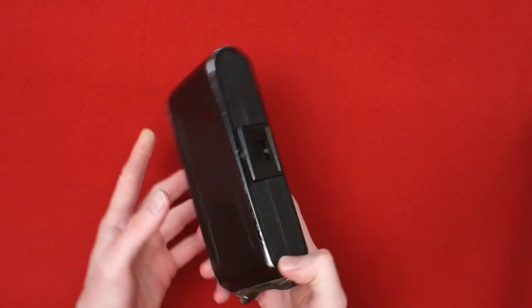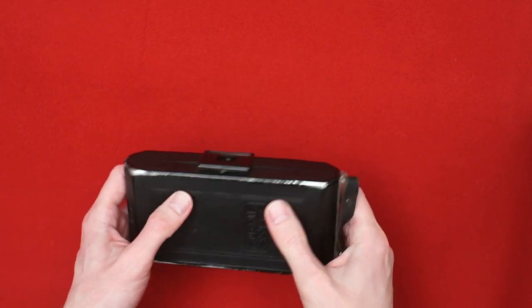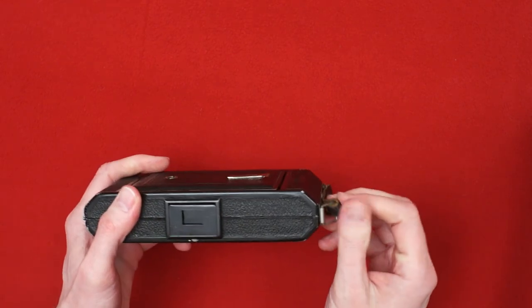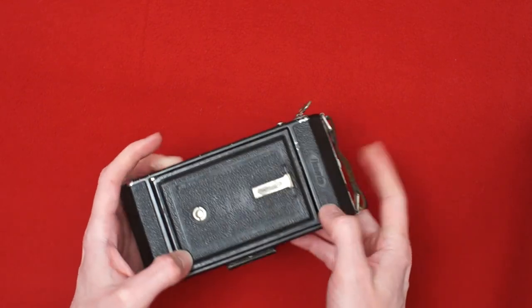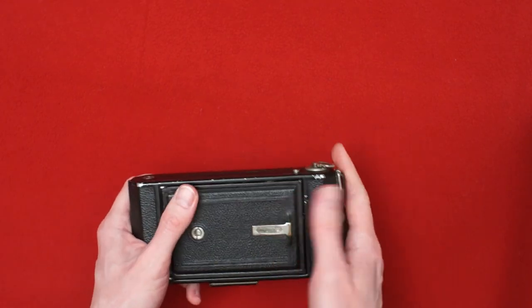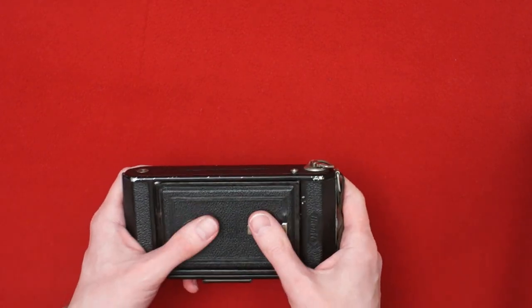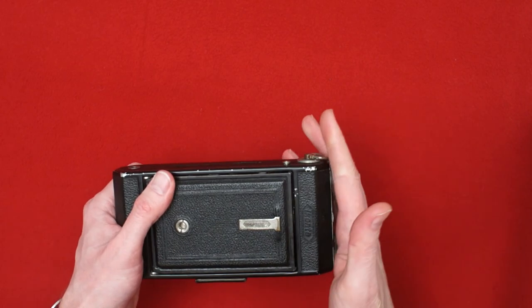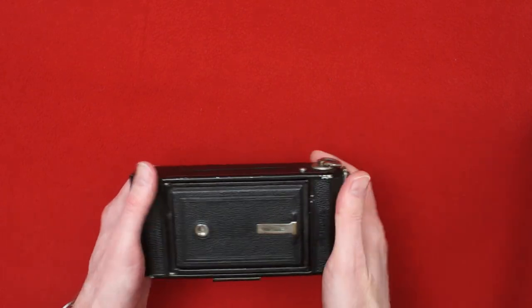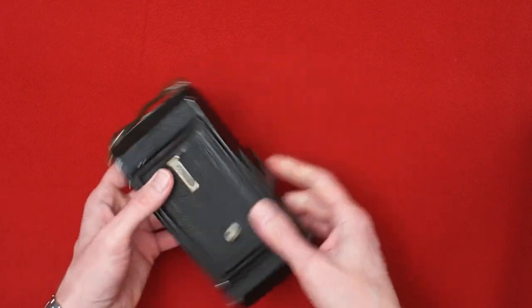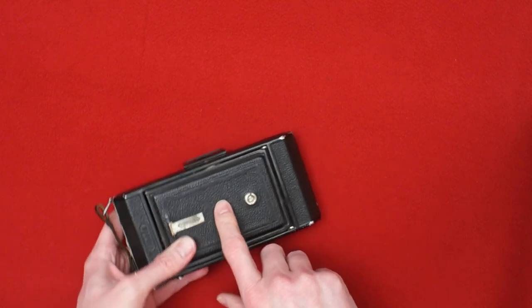About the lens in this camera, this Novar Anastigmat is a triplet, uncoated. I think coating, if I remember correctly, was even like a military secret. It was invented by Germans. So only became widely used after the war, after the Second World War. So it's an uncoated triplet.